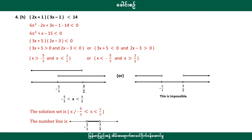2x plus 1, 3x minus 1, less than 14. So 6x squared minus 2x plus 3x minus 1, minus 14, less than 0. So 6x squared plus x minus 15, less than 0.